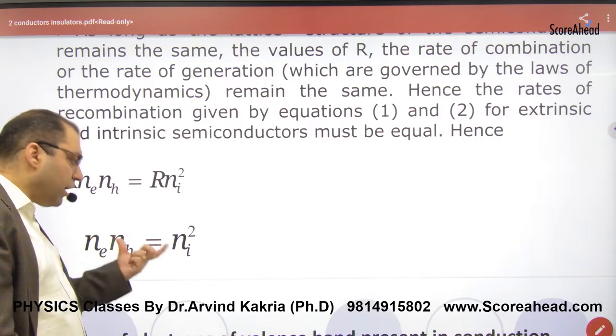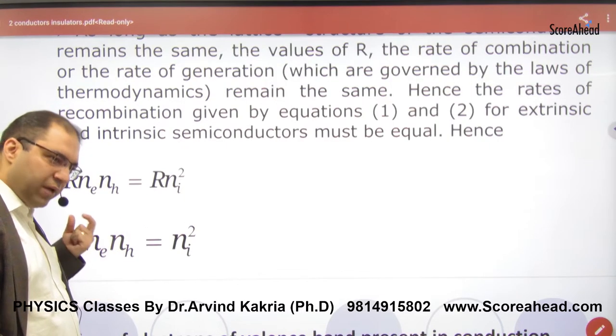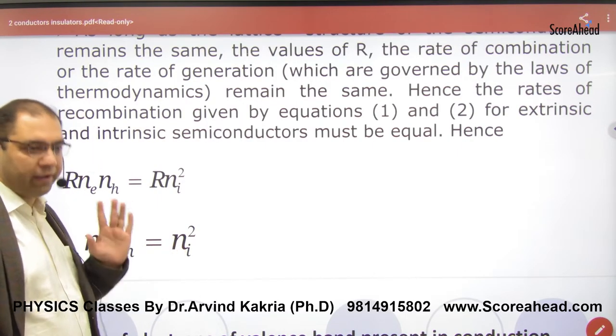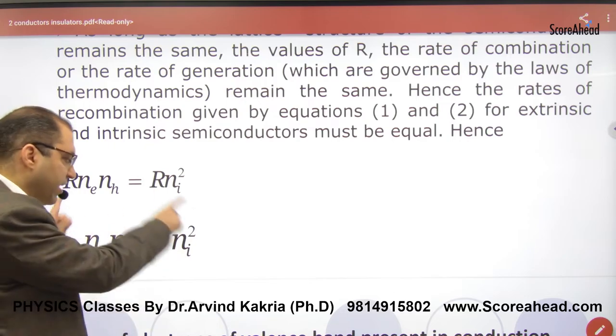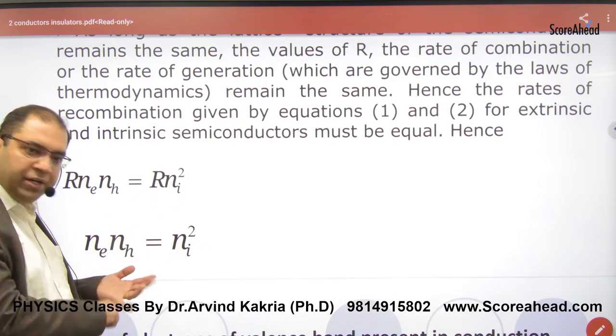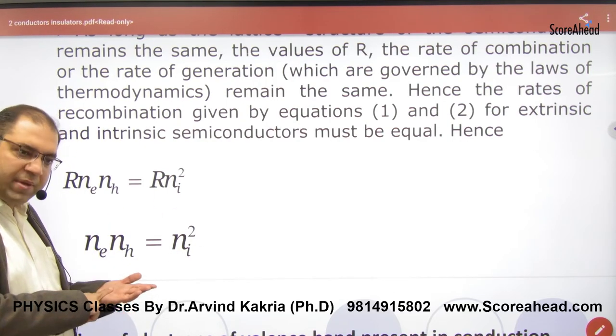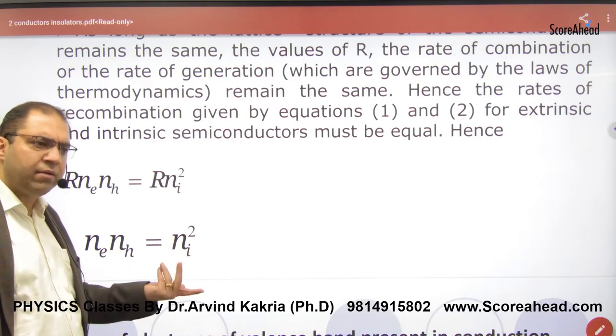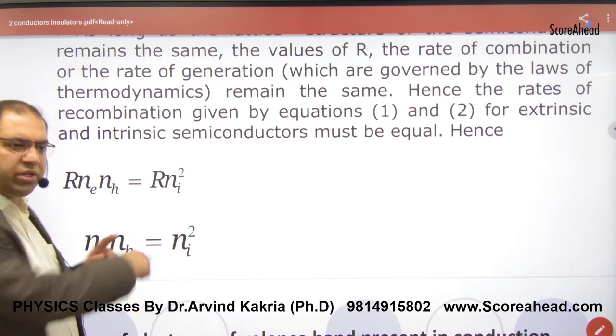So the product of any impure semiconductor, extrinsic or intrinsic, it will always be equal. This means that numerically, n_e into n_h, extrinsic semiconductor charge carrier, and n_i into n_i, hole or electron, is equal. That's important. That is the formula.